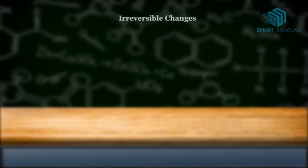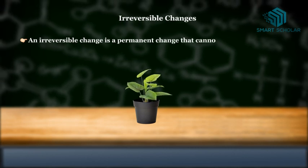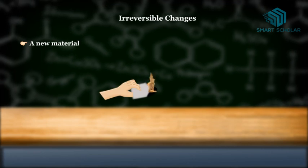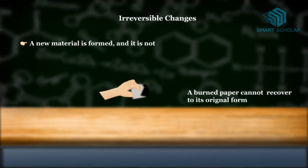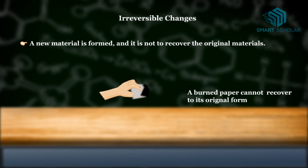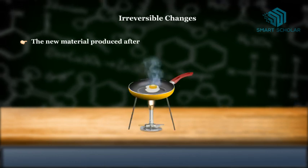Whereas an irreversible change is a permanent change that cannot be undone. A new material is formed, and it is not possible to recover the original material. The new material produced after the change is completely different from the original material.